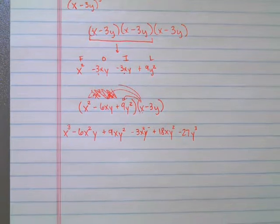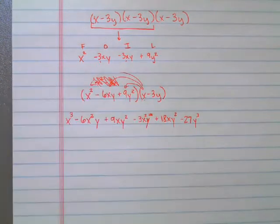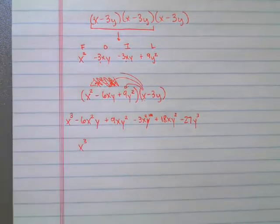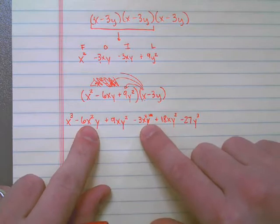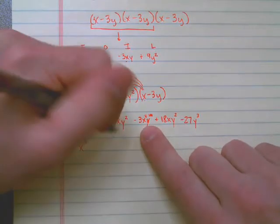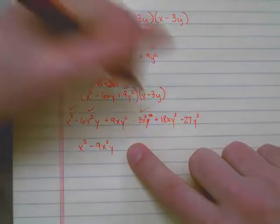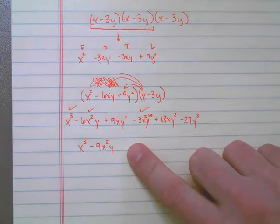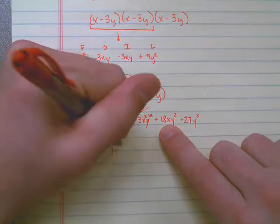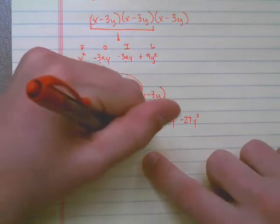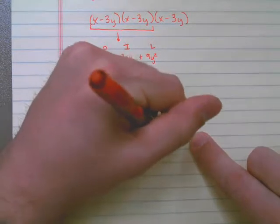So now I'm ready to just combine like terms. So I have x cubed. I notice that I have negative 6x squared y and minus another 3x squared y, so that gives me a total of minus 9x squared y. I notice that I have 9xy squared and then another 18xy squared, so that gives me a total of 27xy squared. And then I have minus 27y cubed.